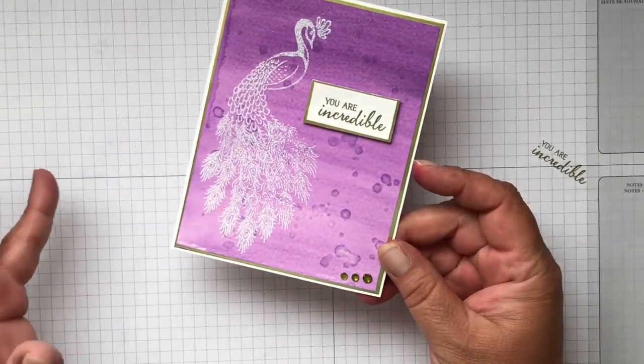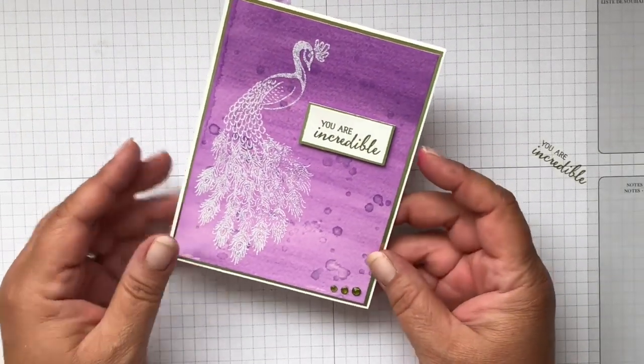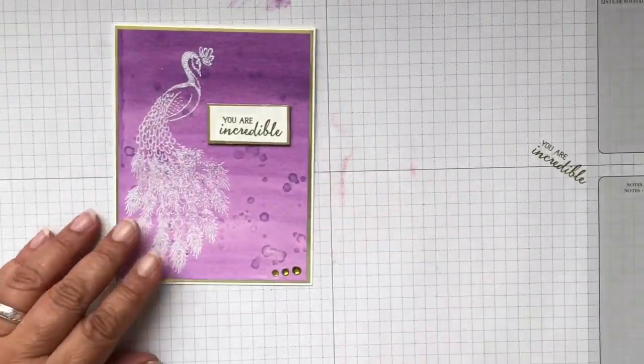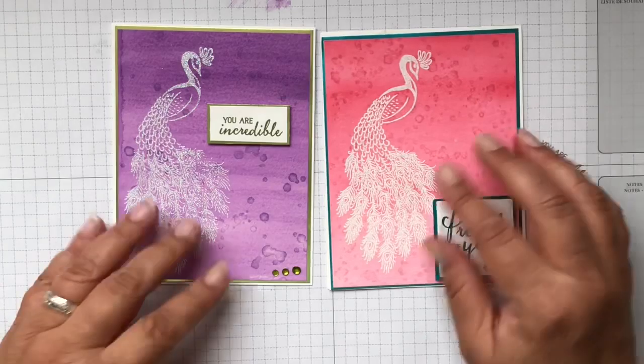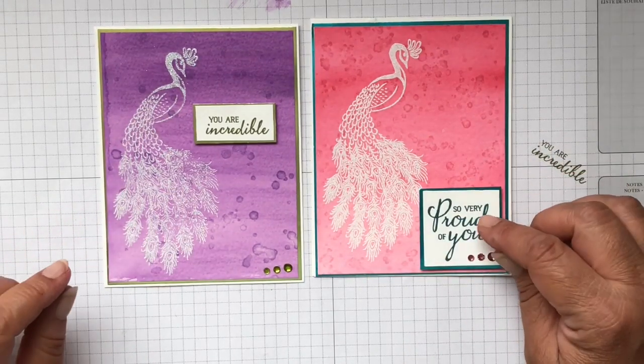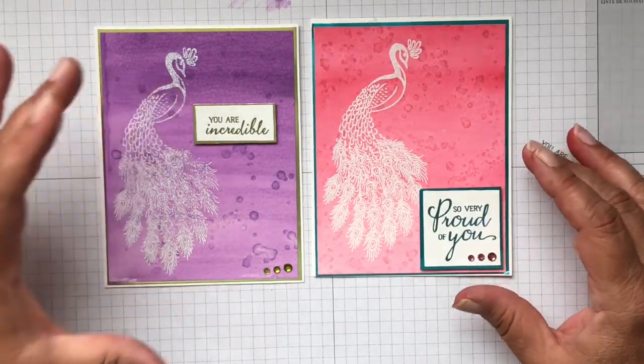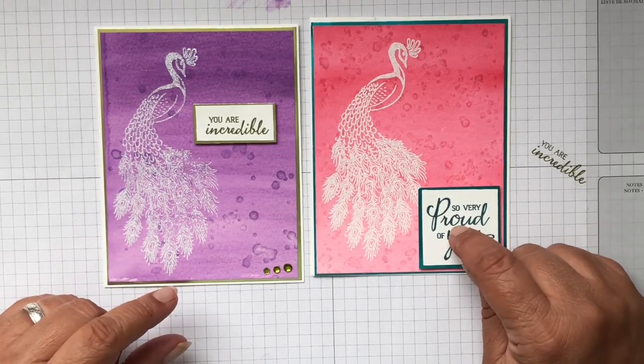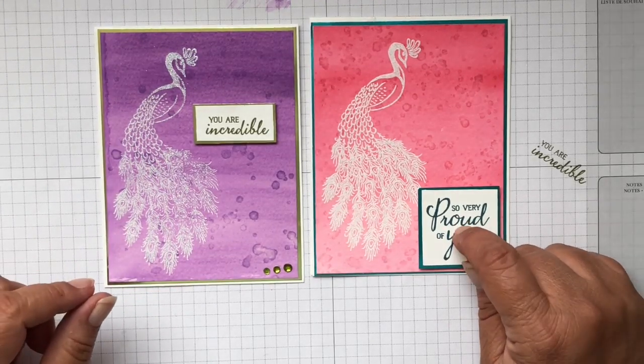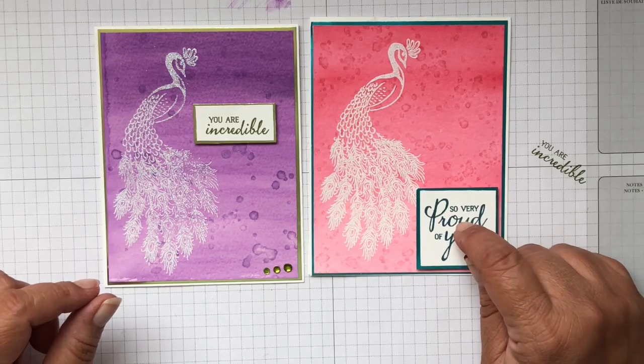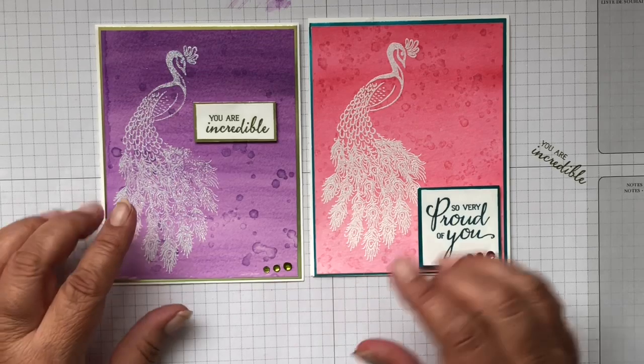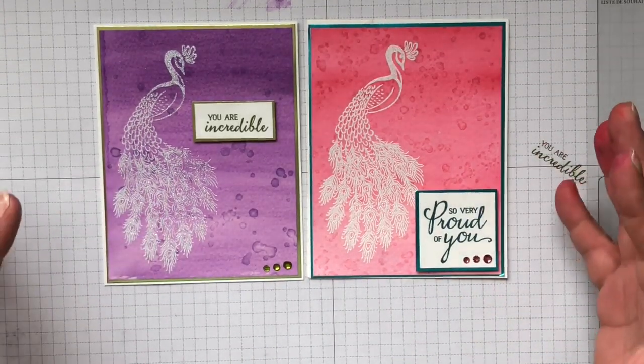So sorry guys, I got interrupted and I had to pause the video, but we've got the jewels on there now. So on this one compared to this one, you can see we've changed up our sentiment a little bit in the placement and everything. So this is cut at one and three quarters by one and three quarters, the foil. And then the whisper white for the sentiment is cut at one and five eighths by one and five eighths. So I've changed that up. I've changed up the embossing powder and of course the colors, but it's basically the same concept.